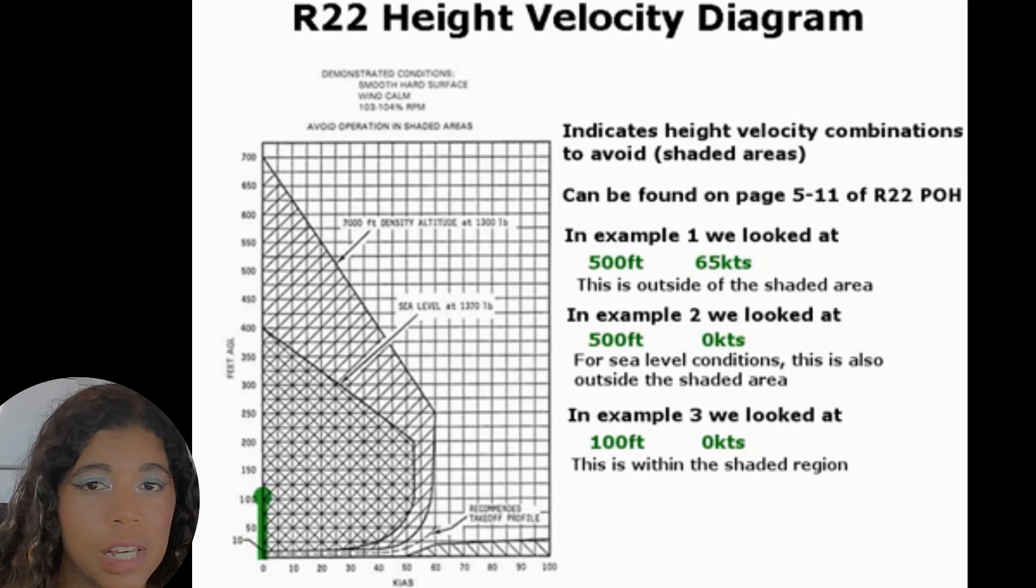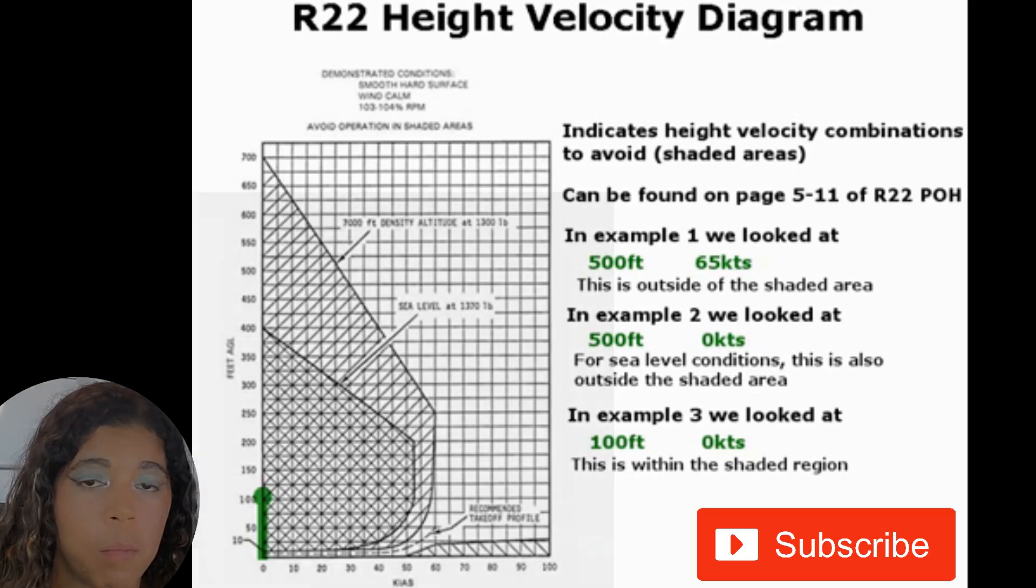The area to fly in to have a safe autorotation is also going to be dependent on pilot experience. For example a Robinson test pilot will be able to have an easier time autorotating than a brand new 50-hour private pilot.